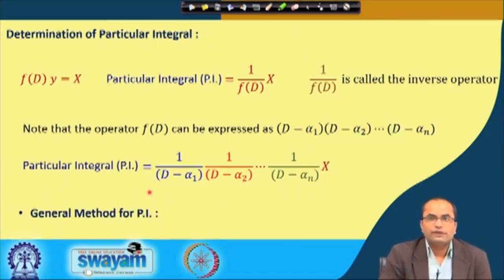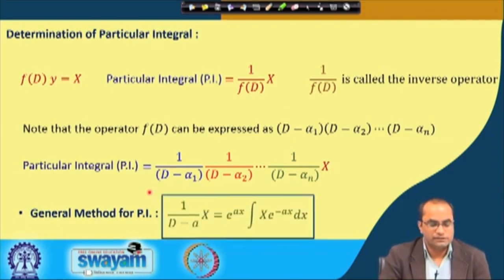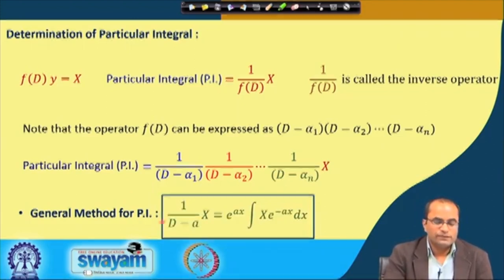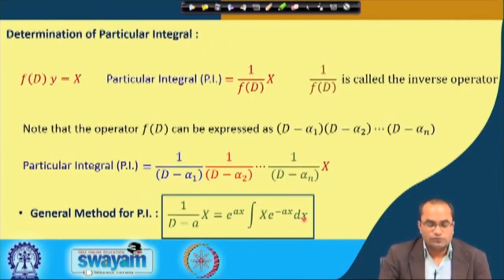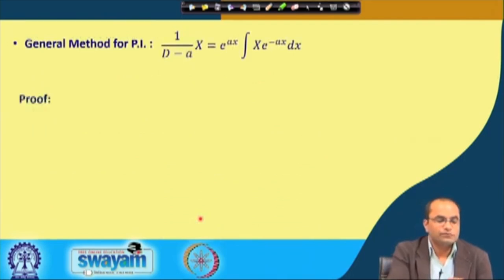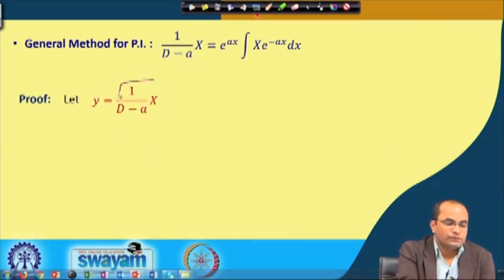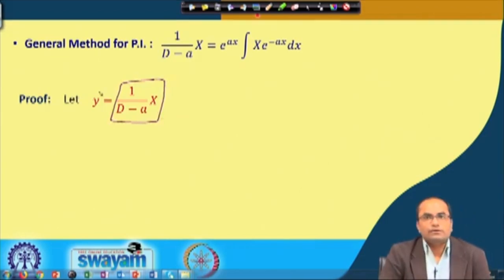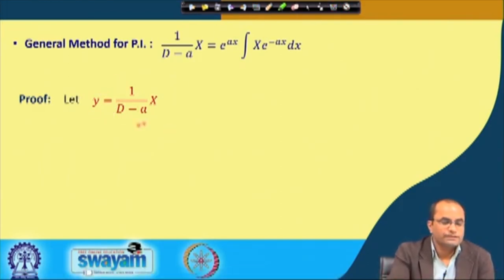This is the very general method for finding the particular integral which we are discussing first; later we will go for some special forms of X and there will be some direct evaluation techniques. To prove that [1/(D−a)] operated on X equals e^(ax) ∫ X·e^(−ax) dx, we let y = [1/(D−a)] X, and then multiply both sides by (D−a) to get the differential equation (D−a)y = X.